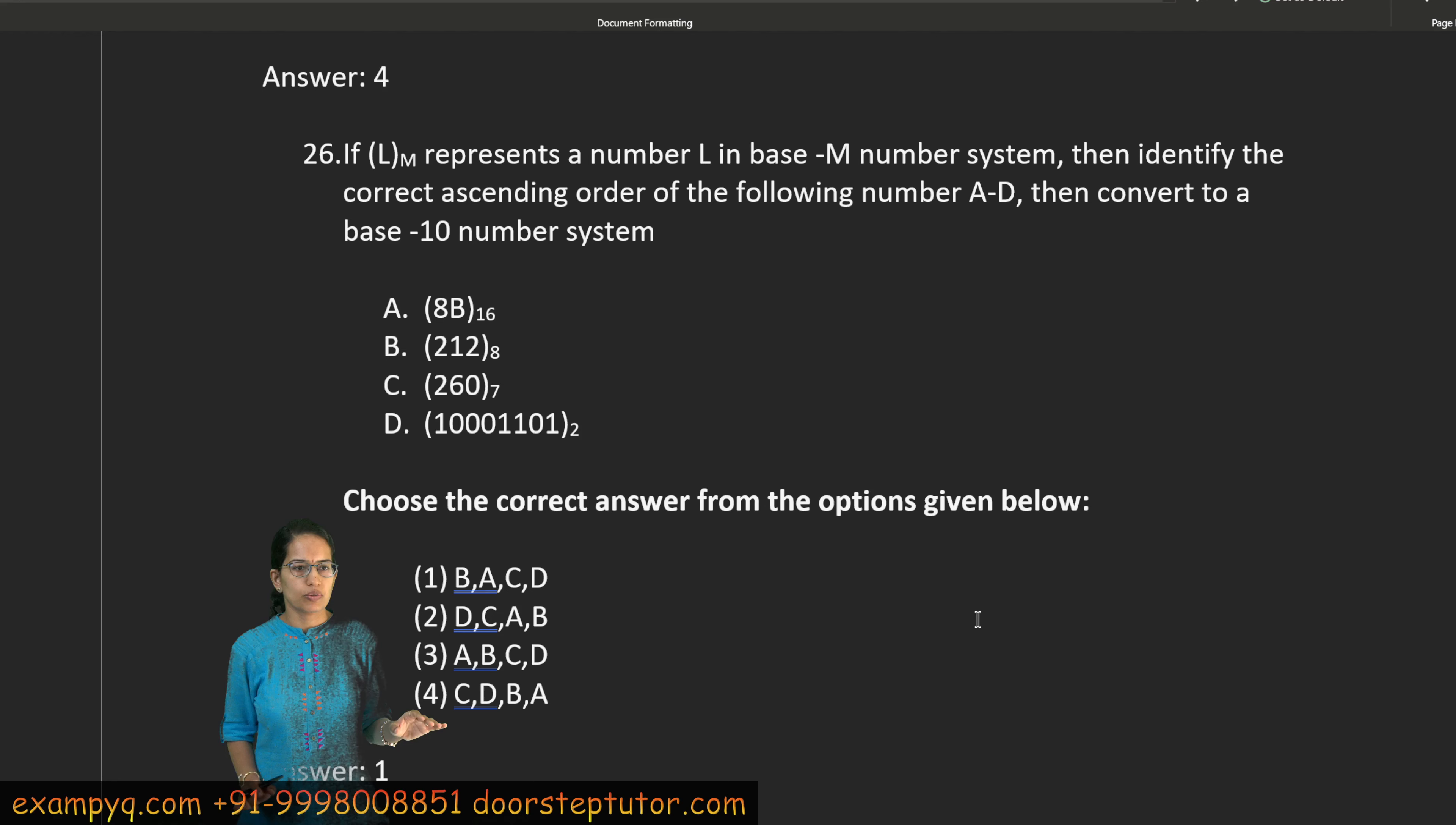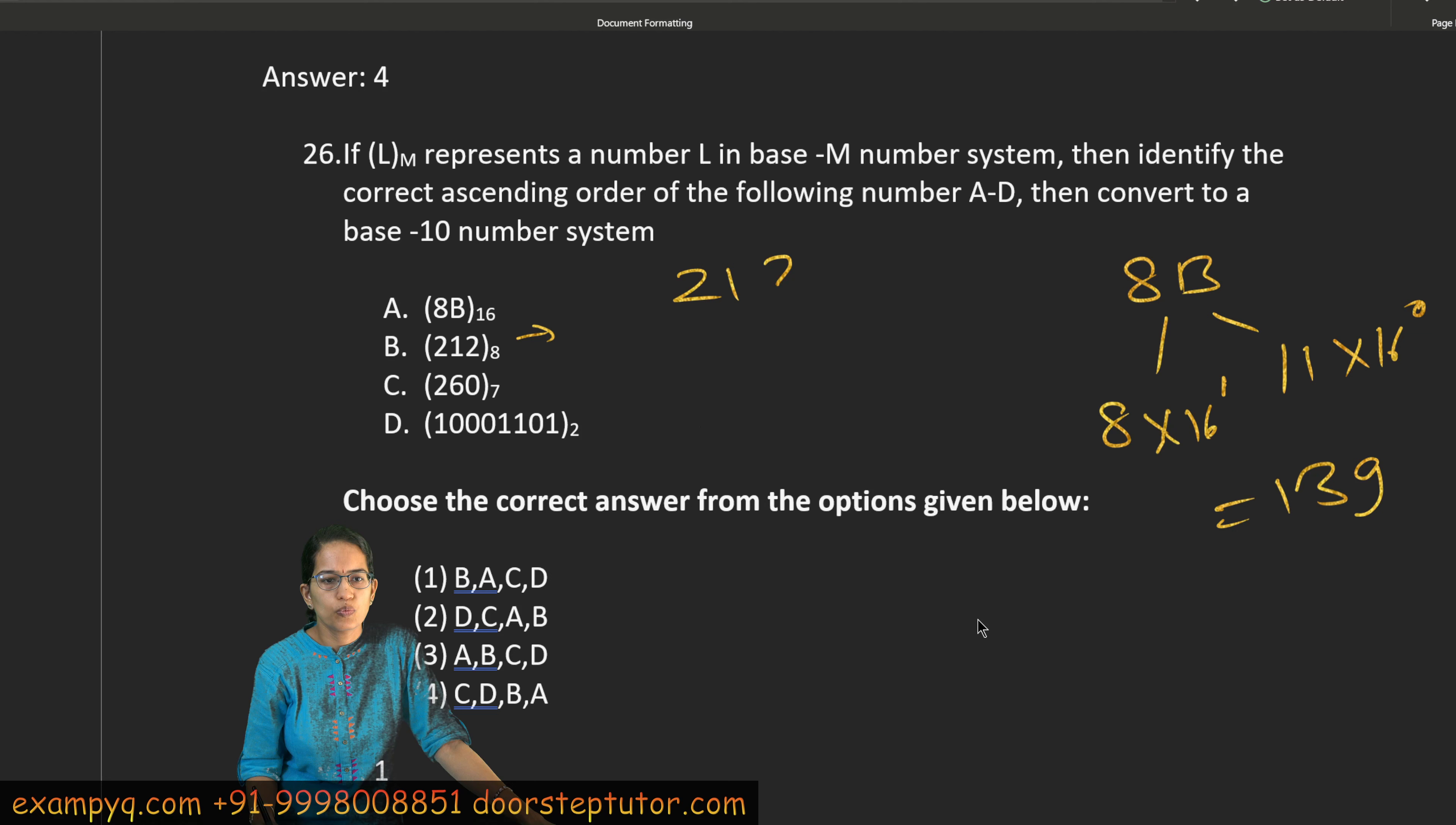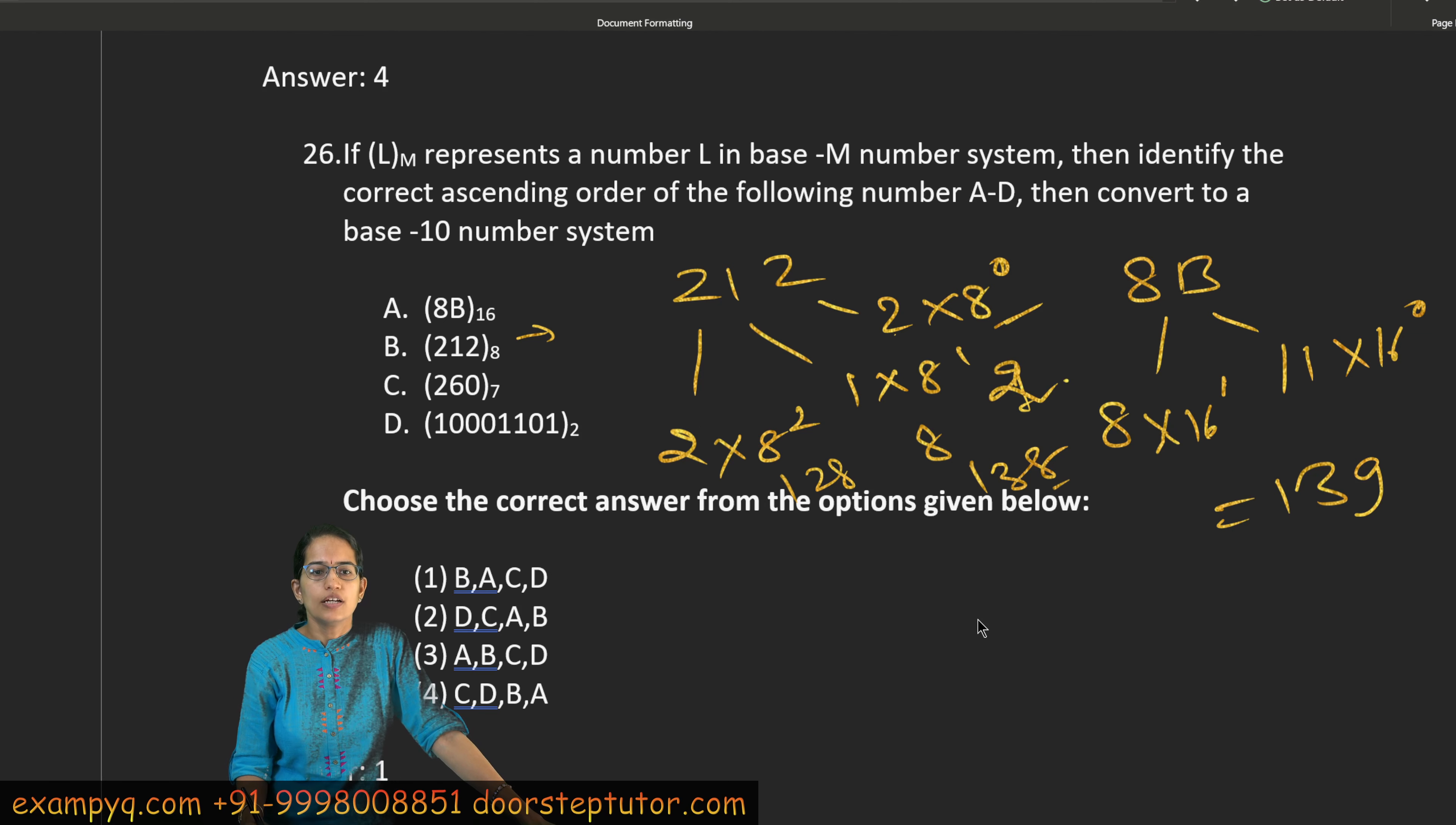Now here you have a base conversion question. This should come very well. Look, 0 to 9 we get a count, after that A, B. So A is 10, B is 11. So what will happen in this case? 8B. This is 11 into 16 raised to 0 and 8 into 16 raised to 1. When we solve this, our answer is 139. In this case, we will solve the next one. 212. 2 into 8 raised to 0, 1 into 8 raised to 1, 2 into 8 raised to 2. 128, 8, and 2. When we add this, this is 138.